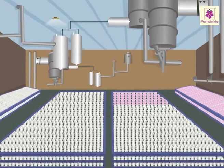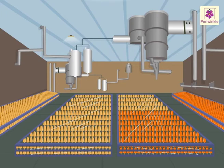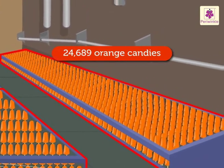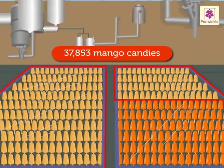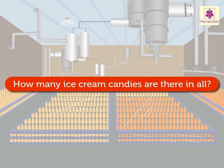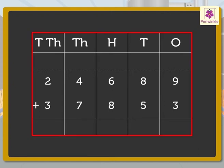Let us buy some of them for our ice cream parlor. Look at those ice cream candies! There are 24,689 orange candies and 37,853 mango candies. How many ice cream candies are there in all? Let us start. Write the numbers 24,689 and 37,853 in the place value chart.